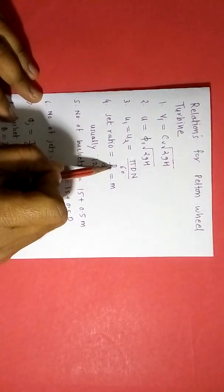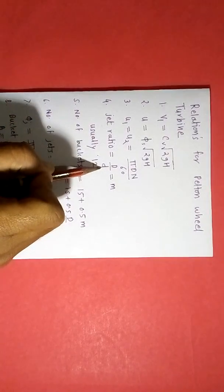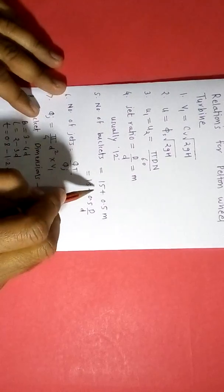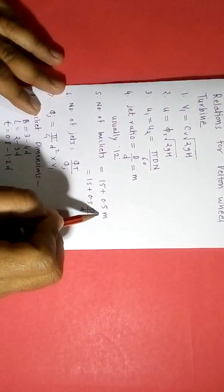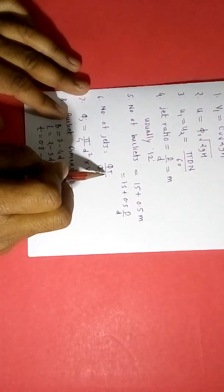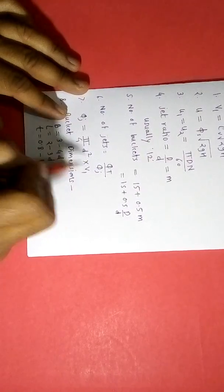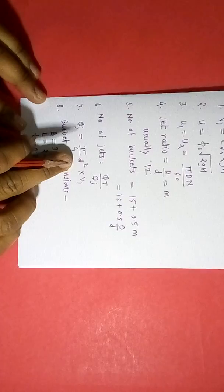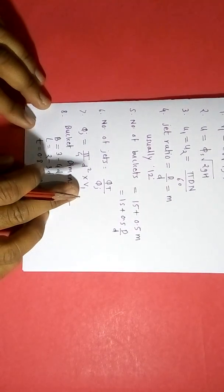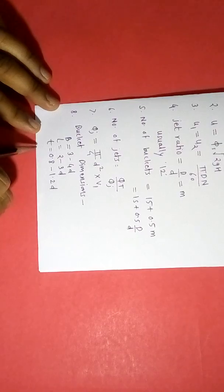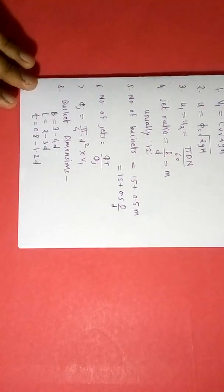There is a term called jet ratio, which is the ratio of rotor diameter to jet diameter, and it is usually 12. The number of buckets equals 15 plus 0.5m, where m is the jet ratio. The number of jets is given by total discharge divided by discharge through a single jet, and discharge through a single jet is pi/4 times D-squared times jet velocity. Bucket dimensions include relationships for width, length, and thickness.